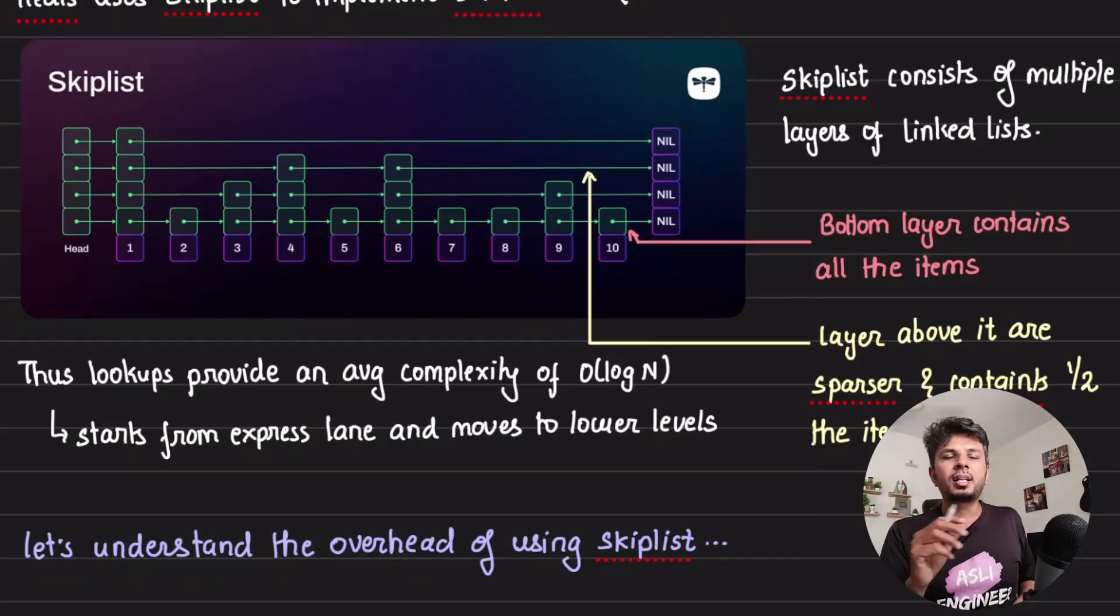When you're looking for a particular element, you start from the fastest lane and from there you move to the layer bottom, then to the layer bottom again. This way, in almost log(n) lookups, you would reach the element.